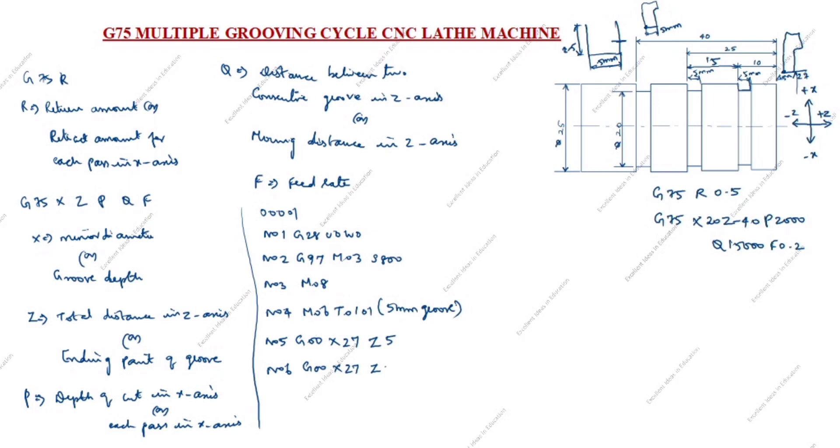Next N06 G00 X27 Z. Z value how we will take? This is 5, tool is 5 right, so tool is 5, already here is 5, so we will take 10, minus 10. We took 5mm groove tool. Instead of 5mm we will take 3mm, means 5 plus 3 is 8, so Z minus 8.